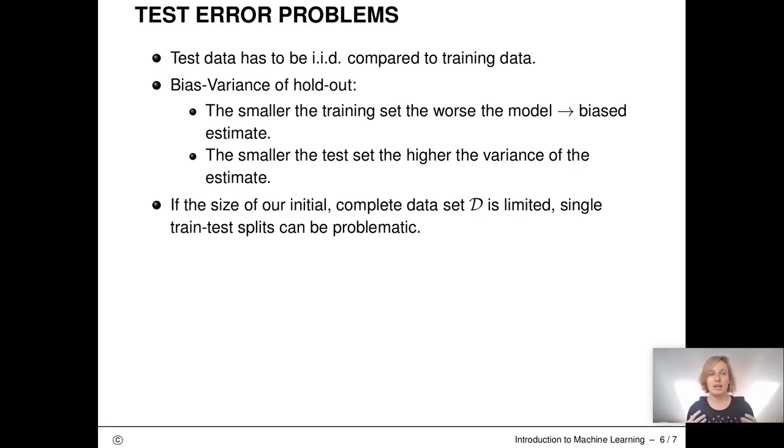Imagine an example where we predict rent prices. Your training data is from Munich and your test data is from Istanbul. The rent situation in these two cities may be completely different, which means the data generating process is different and the data points are hence not i.i.d. You will not be able to get a good estimate of your generalization error with these two data sets.